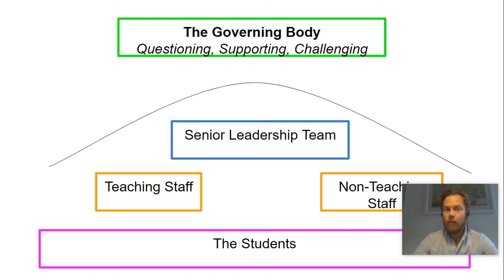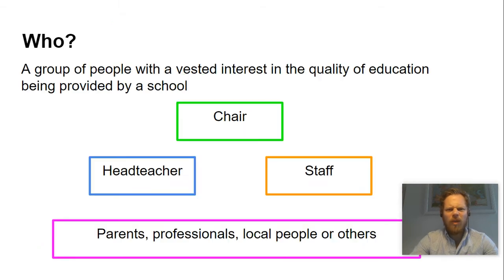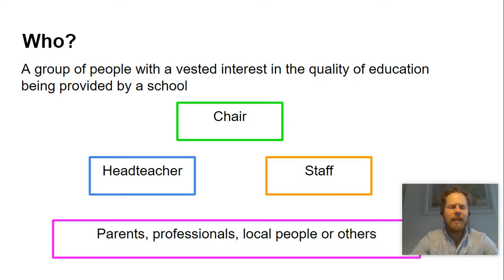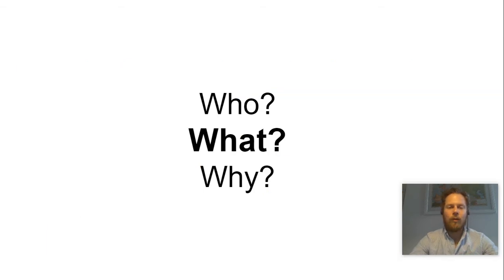A group of people who are there to question what's happening, to support the leaders in their ambitions, and also to challenge them to do what they say they're going to do. So who would want to do that? Well, it's people who have a vested interest in the quality of education being provided by the school. The head teacher becomes a governor automatically. There's a chair, usually a person who's leading the whole group — a parent, a local professional, or someone who has a vested interest in the school. And then there are staff governors too. This group of people together have a real interest in how well the school is doing. And that brings us neatly onto what they are trying to do in their role as governors.